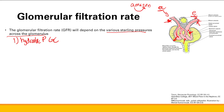We go from A to E. If we dilate the afferent arteriole, increased dilation means more blood flows, increasing blood in the glomerular capillaries and raising hydrostatic pressure. If you dilate the efferent arteriole, extra blood leaves the glomerular capillaries, decreasing hydrostatic pressure.